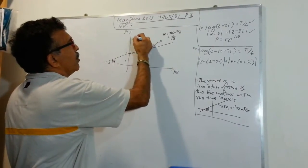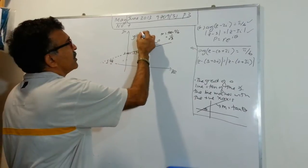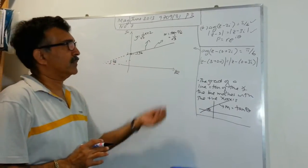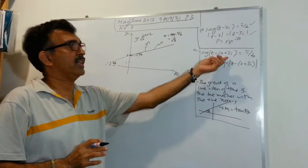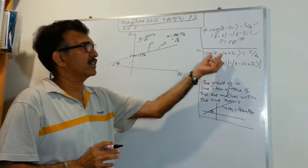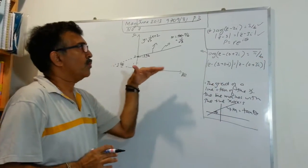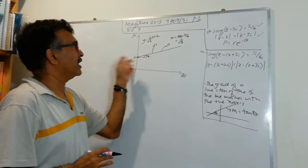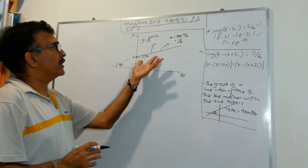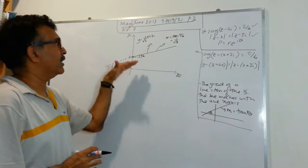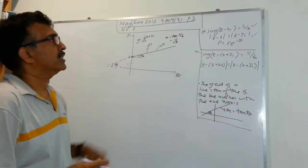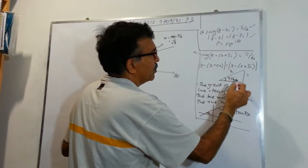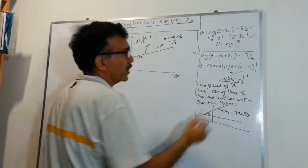So the equation of this straight line will be y equals (1/√3)x + 2. We know the gradient is 1/√3 and the y-intercept is 2. For pi over 6, from our trigonometry we have the 1, 2, √3 triangle. Now that we're done with this first locus, we need to worry about the second one.